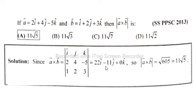plus minus 11 whole square plus 0 square, square root is equal to 605. So square root of 605 is equal to 11 square root of 5, so option A is correct. If you like my lecture then please